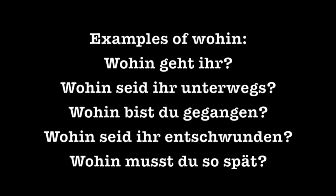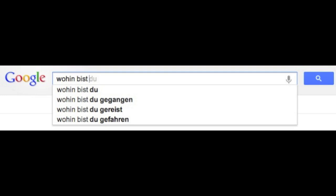Wohin means 'to where' and is used to inquire about the future location of something or someone. Examples: Wohin geht ihr (to where are you going?), Wohin seid ihr unterwegs (to where are you on your way?), Wohin bist du gegangen (where did you go?), Wohin seid ihr entschwunden (to where did you disappear?), Wohin musst du so spät (to where must you go so late?). Googling 'Wohin bist' returns: Wohin bist du gegangen (to where did you go?), Wohin bist du gereist (to where did you travel?), Wohin bist du gefahren (to where did you drive?).